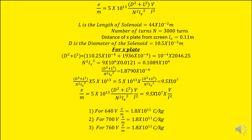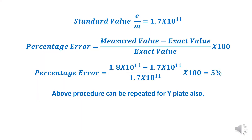Using these calculations for different currents and voltages, the value of e by m comes out to approximately 1.8 into 10 to the power 11 coulombs per kilogram, which is approximately constant across readings. The standard value is 1.7 into 10 to the power 11. The percentage error is calculated as: measured value minus standard value, divided by standard value — giving an error of approximately 5 percent.